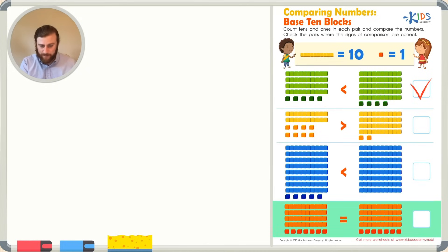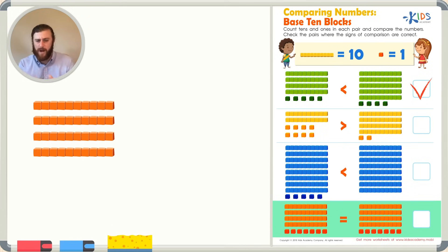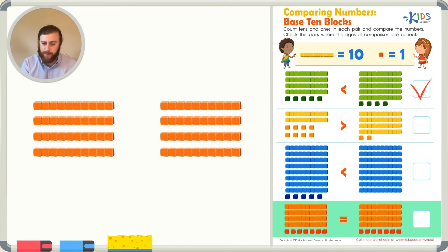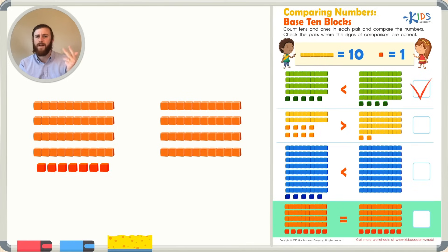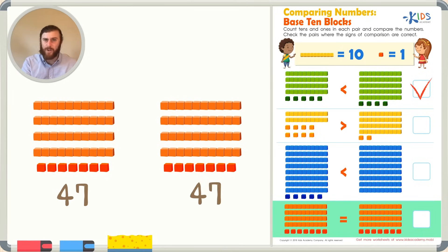Now let's look at the last problem. Let's count the base 10 blocks and see how many there are in each problem. Let's start with the longs on the left: 1, 2, 3, 4, which means there's 40. Let's count the longs on the right: 10, 20, 30, and 40. Also 4 longs. So they both have 4 longs. Let's count the cubes on the left: 1, 2, 3, 4, 5, 6, 7 — so we have 40 plus 7, which is 47. Now let's count the cubes on the right: 41, 42, 43, 44, 45, 46, and 47. There are also 47 on the right. These numbers are equal to each other, and we can see from the comparison symbol it's got it correct. These numbers are equal, so we can go ahead and check that as correct.